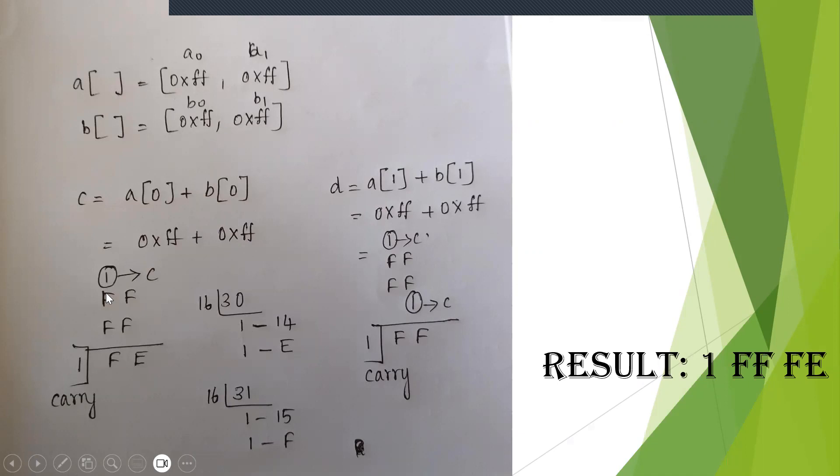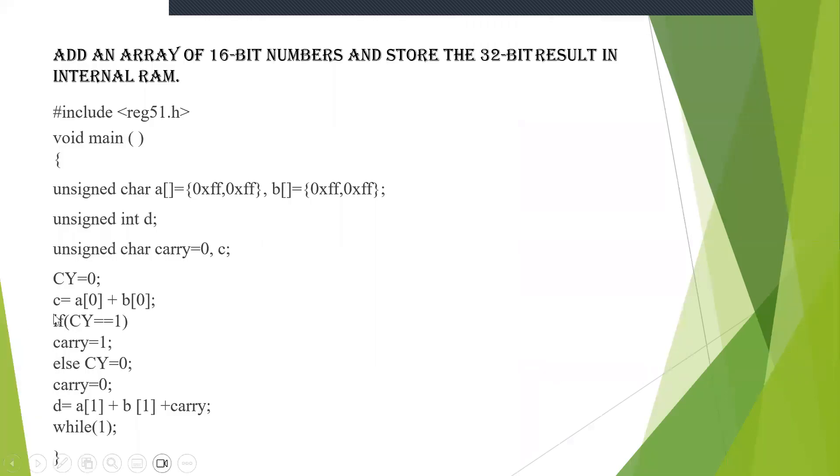So 31 hexadecimal value is 1 times 15, so 1F. So F is stored here and 1 will be your carry bit. Now here in c, what happens? You have got FE as the answer, but 1 is the carry bit. So here, if cy == 1, yes you have carry, so the carry is stored in the carry bit.